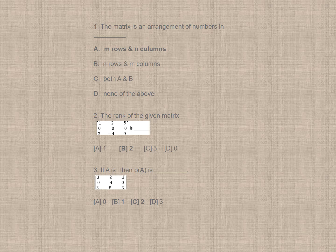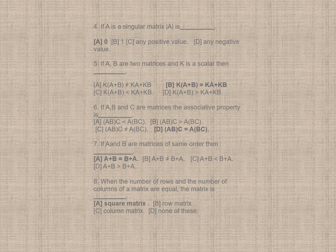Question number 3. If A is, then row A is, in this particular, taking this matrix into account, here it will be 2, so correct option is C. For if A is a singular matrix, then mod A is, correct option is A, 0.